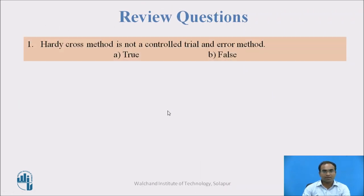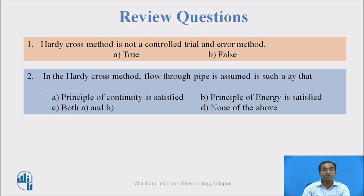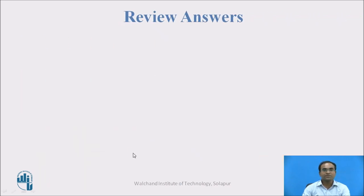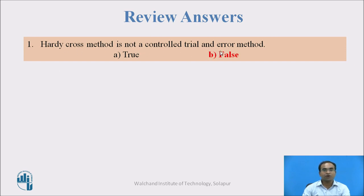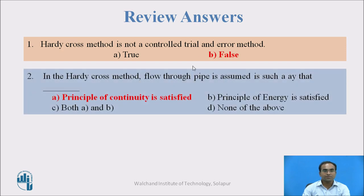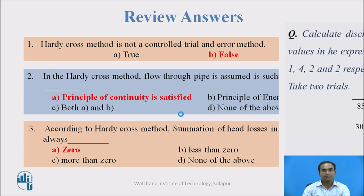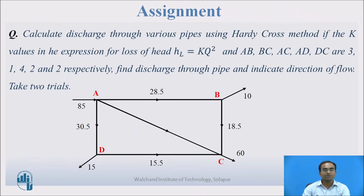Review questions: (1) Hardy Cross method is not a trial and error method — True or False? Answer: False; it is always a trial and error method. (2) In the Hardy Cross method, flow is assumed so that which principle is satisfied? Answer: Both continuity and energy principles. (3) According to the Hardy Cross method, the summation of head losses in a loop is always — zero, less than zero, or more than zero? Answer: Always zero.